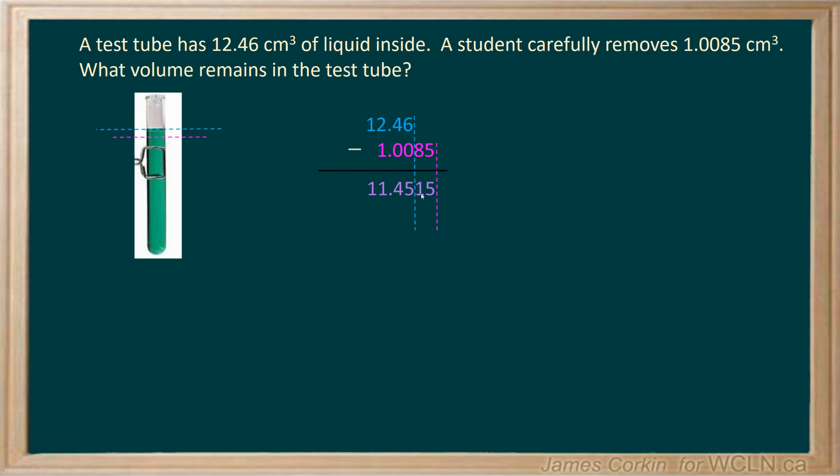So because this is a one which is less than five, the next number is five or less I round this to 11.45, I just leave it as it is. So the final answer is 11.45 cubic centimeters is the amount of liquid left in the test tube.